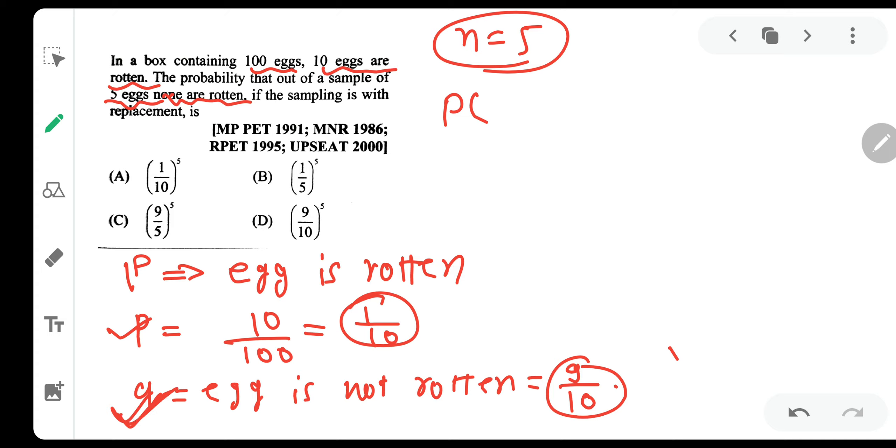And that failure you want because the egg is not rotten. How many number of times? 5 number of times. So it will be P of X equals 0 because you want success 0 number of times, because no egg is rotten and rotten is our success.